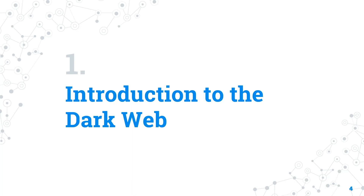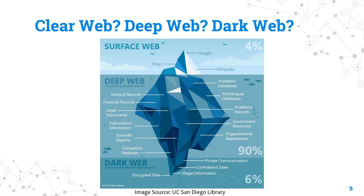Introduction to the dark web: the surface web consists of sites indexed by search engines like Google and Bing. The majority of the internet is the deep web — any website not indexed by search engines, including databases, server instances, or any site you cannot search from search engines. The third layer is the dark web, which requires special software to access.